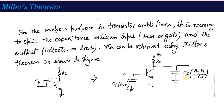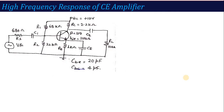If asked in a two-mark question what Miller's theorem means, you must explain that the capacitance between input and output is divided into two equivalent parts — input side and output side — using Miller's theorem. We will use this in our frequency response derivation. So let's start the high frequency response of common emitter amplifier.